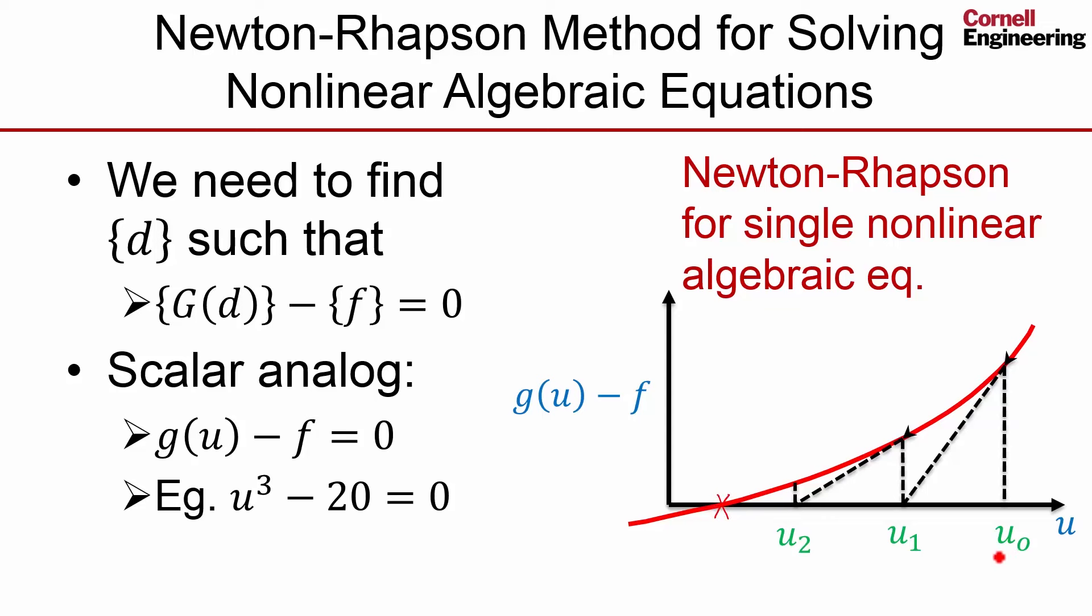I start off with an initial guess, okay? And then I say, I take that initial guess and I substitute it in here. Now, if that was the exact solution, the right-hand side would be 0, but it's not 0. It's equal to this value.